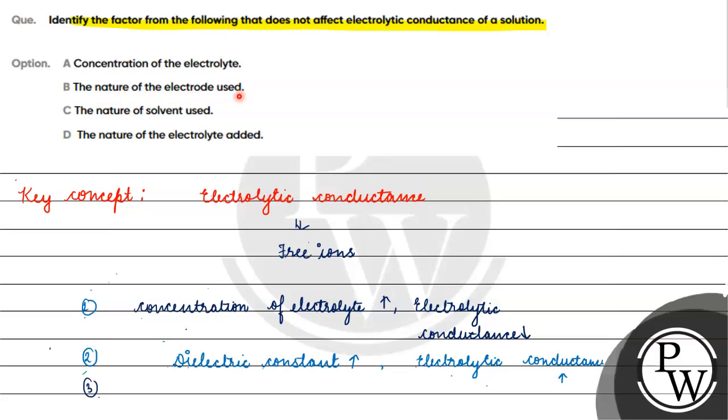The correct answer for this question will be Option B — nature of the electrode used — as it does not affect electrolytic conductance. I hope you understood it well. Thank you, all the best.